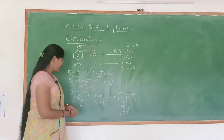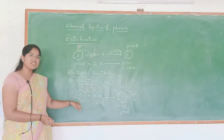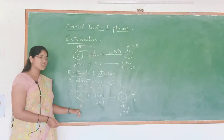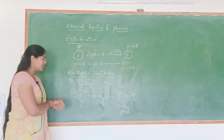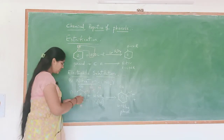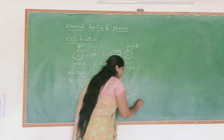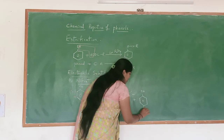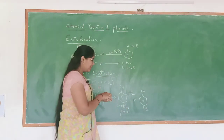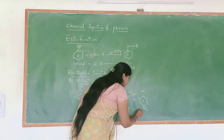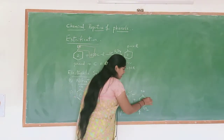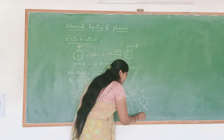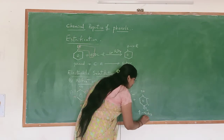There is one more possibility. Even at the para position, we can see increased electron density, so the incoming electrophile NO2 can also replace the hydrogen present at the para position. So if this NO2 replaces this hydrogen, we will get another product — the phenol ring with the NO2 group located at the para position. Then it is known as 4-nitrophenol.